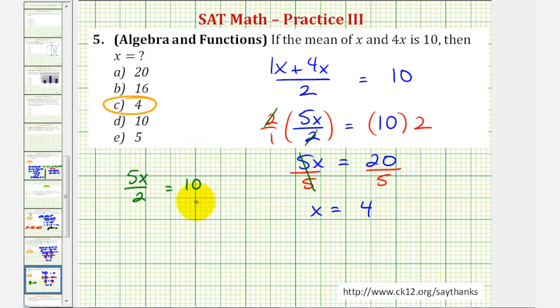If we multiply both sides of the equation by the reciprocal of 5 halves, which would be 2 fifths, we could solve for x in one step. Let's multiply the left by 2 fifths and multiply the right by 2 fifths.